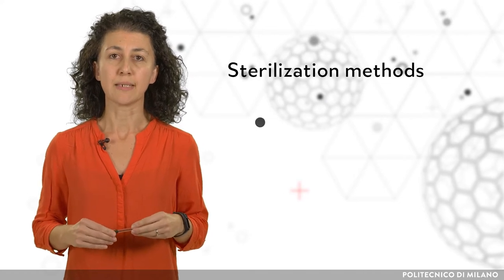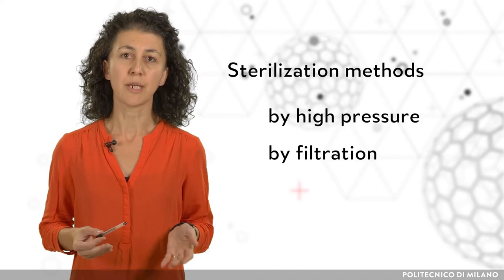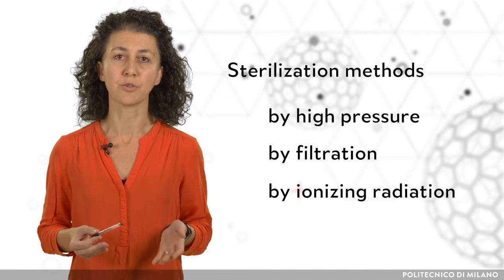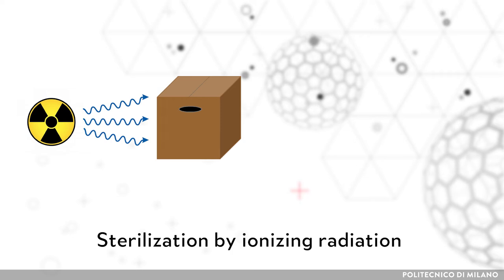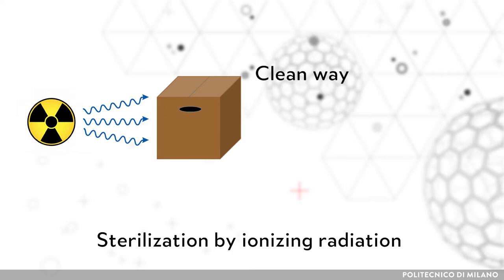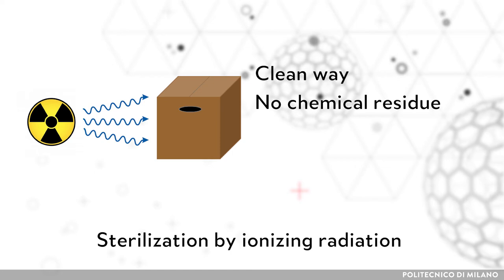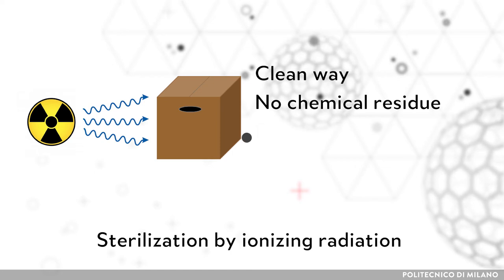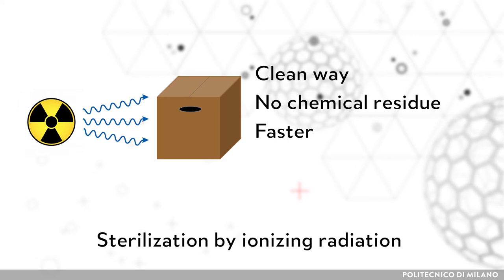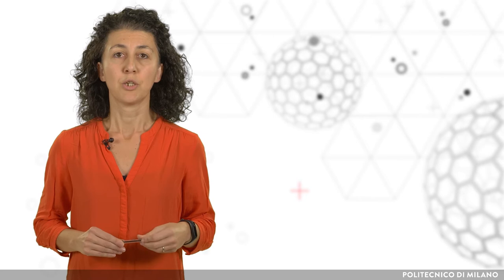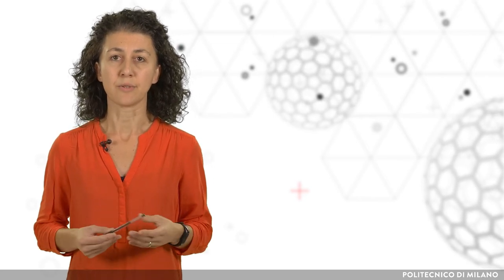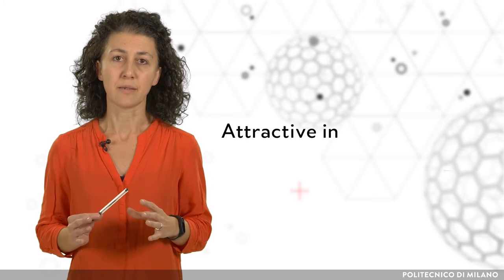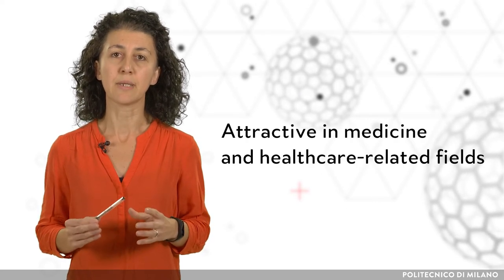Sterilization can also be obtained by high pressure, filtration, and also by ionizing radiation emitted by radionuclides. Sterilization by ionizing radiation provides a clean way to sterilize things without leaving a chemical residue. Moreover, it is achieved faster than by other conventional methods and, under suitable conditions, without degrading the material. Due to its advantages over heat and chemical-based sterilization techniques, this method is particularly attractive in medicine and healthcare-related fields.